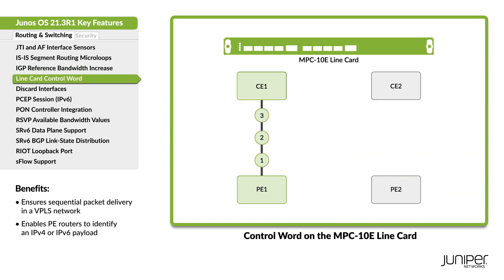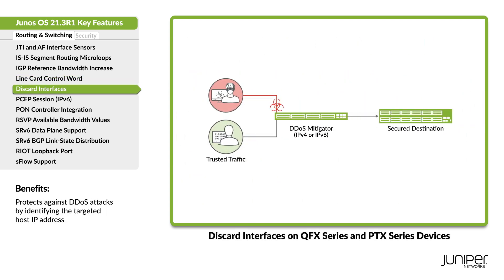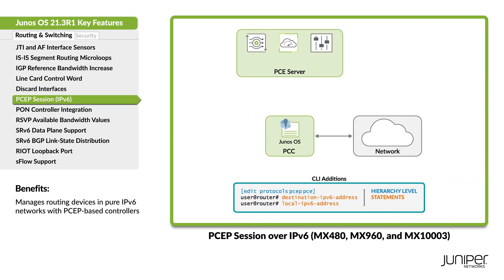Configure the control word negotiation to maintain the sequence of packets between the label stack and the layer 2 payload for VPLS services. You can now use a discard interface to drop DDoS attack packets and log those packets with a firewall filter configuration.